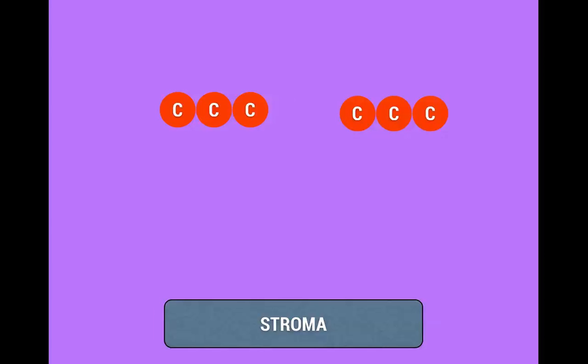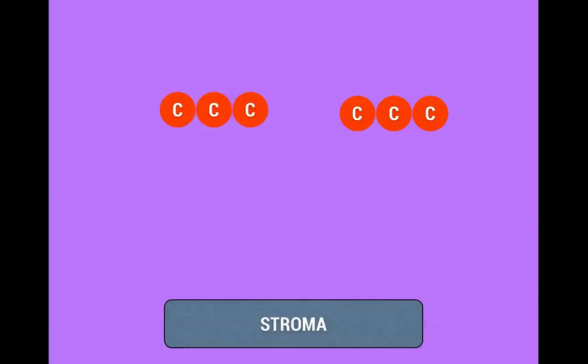The two three-carbon molecules are much more stable and we call it carbon fixation. Carbon fixation means that we have fixed the problem of the unstable carbon, so now they are stable again. They're not moving around, they're not going crazy, because we don't like crazy carbon. There's nothing worse than crazy carbon.